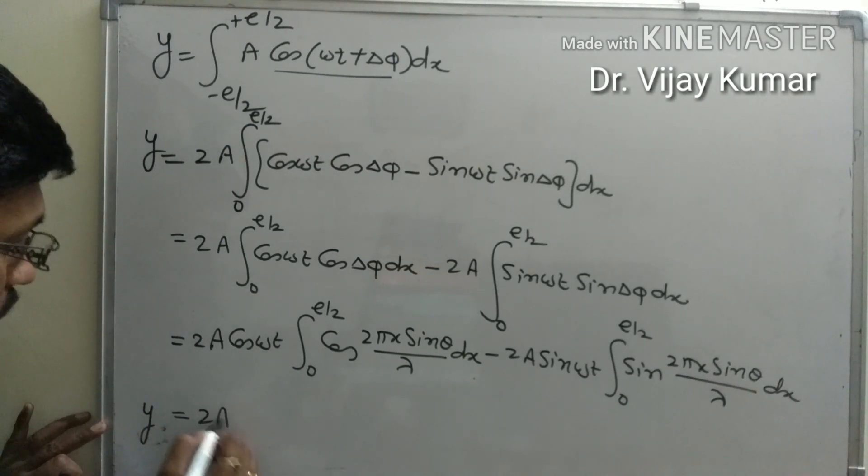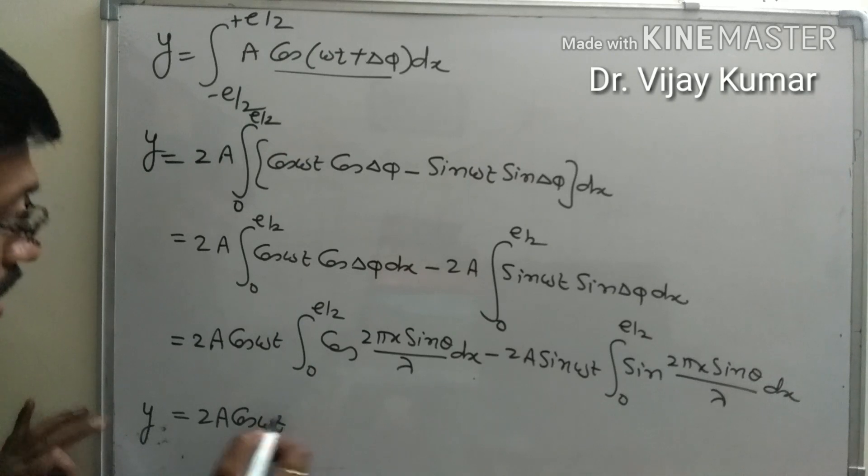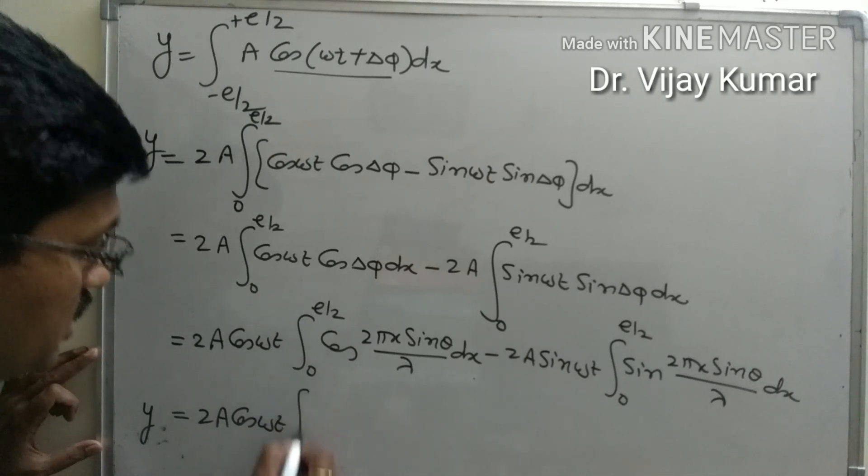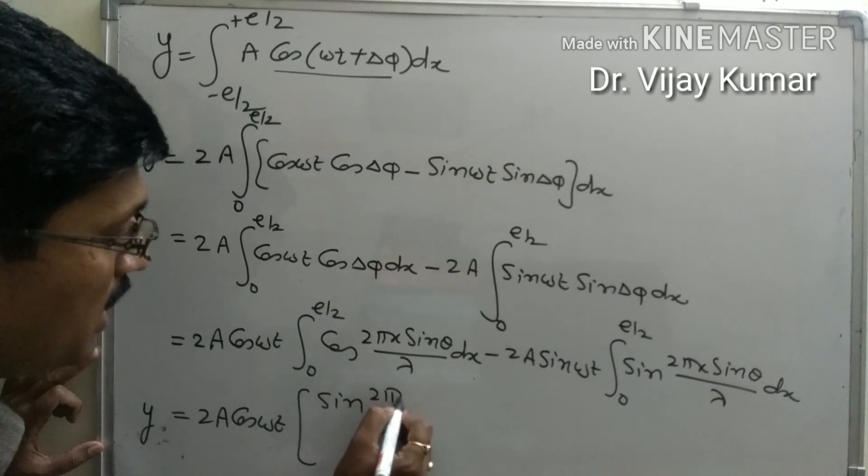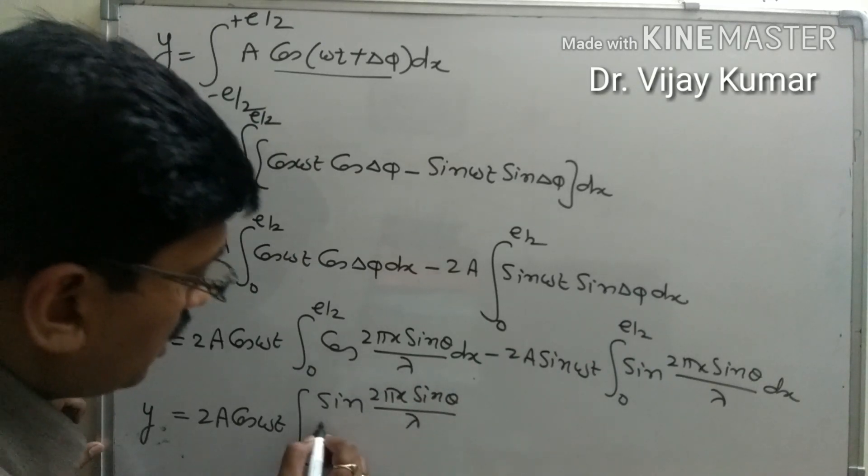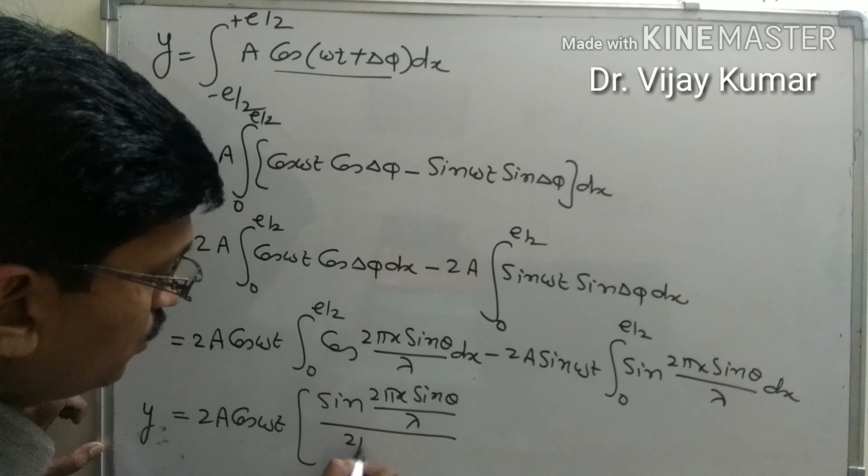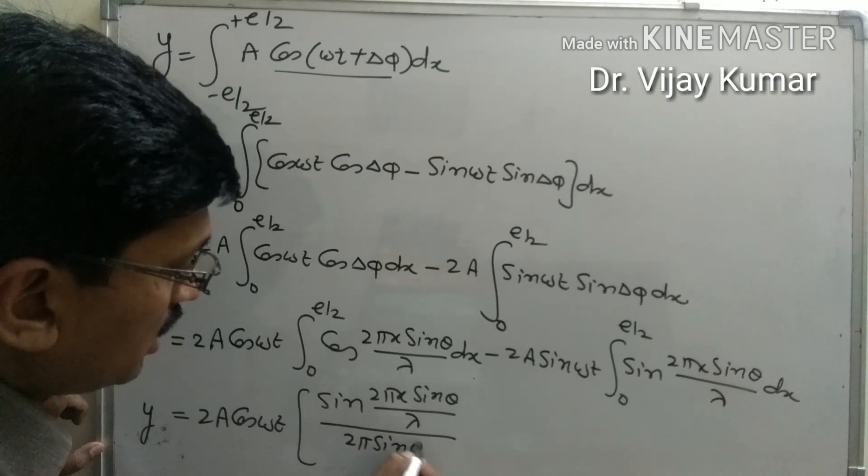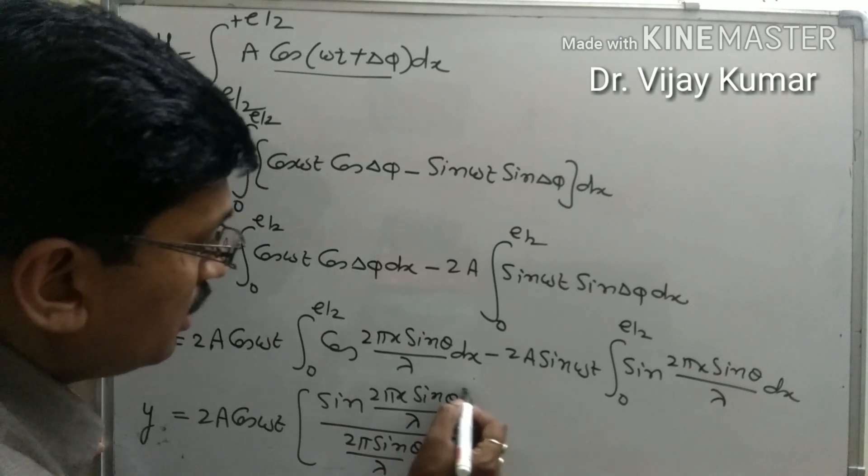So y equals twice a cos(omega t) - since the integration of cosine is sine - times sin(2 pi x sin theta over lambda) divided by (2 pi sin theta over lambda), with limits from 0 to e by 2, minus...